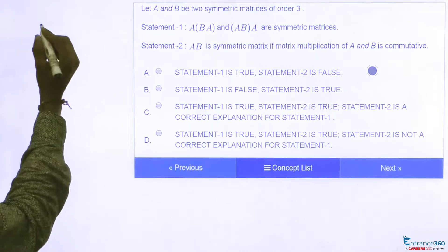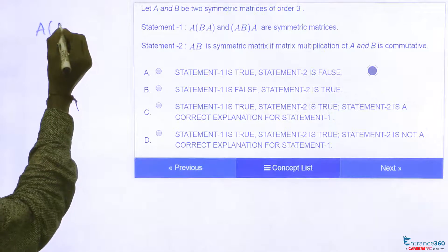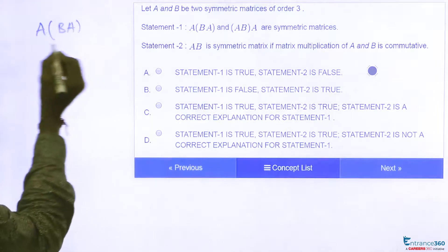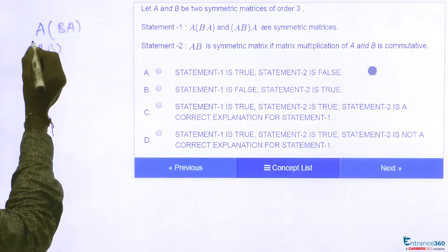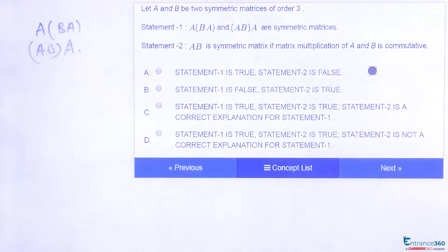Statement 1 is: A(BA) and (AB)A are symmetric matrices.